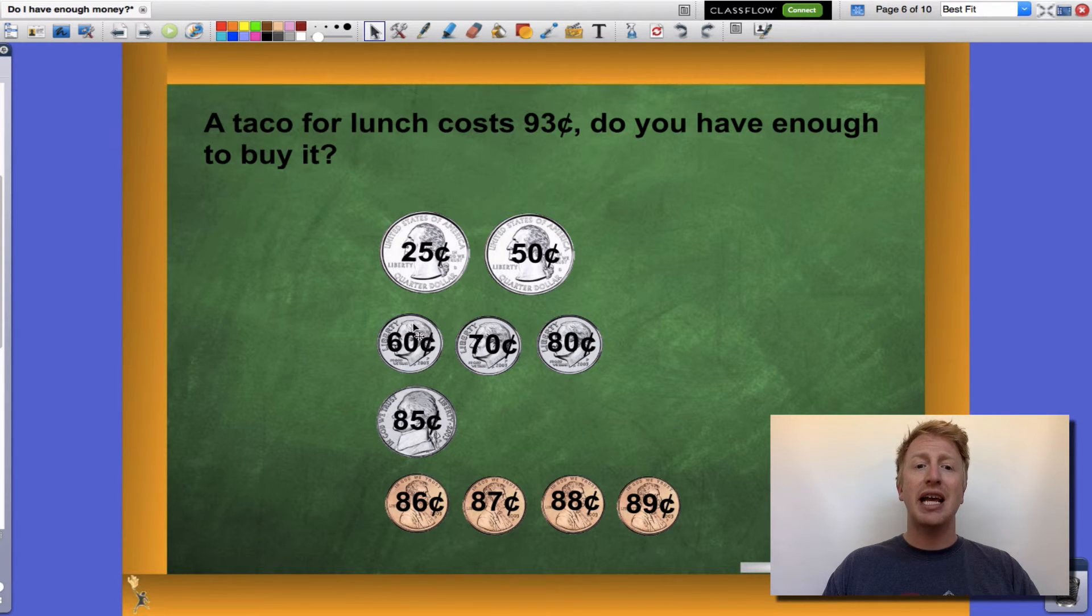When I add my dimes in, I get 60, 70, 80. One nickel gets me to 85 cents.